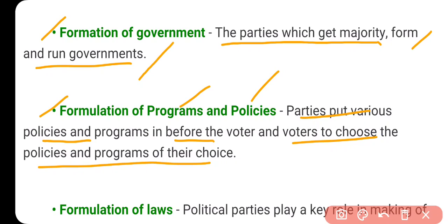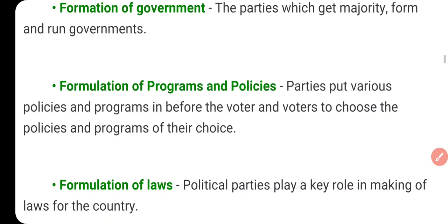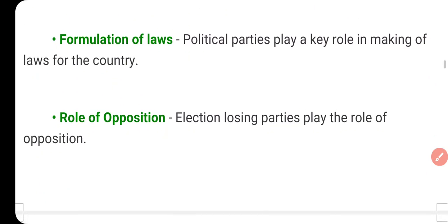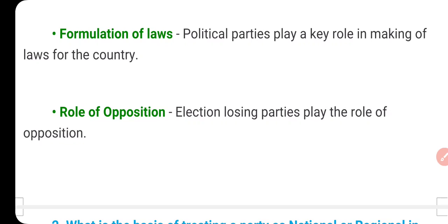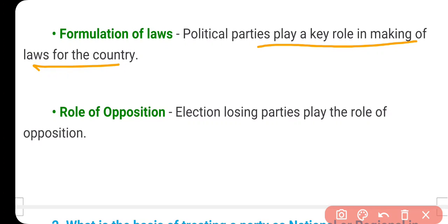The fourth function is the making of laws. Political parties play a key role in making laws for the country. Parliament or the state assembly members — MPs — who come are members of political parties. So political parties play a very important role in the making of laws too.